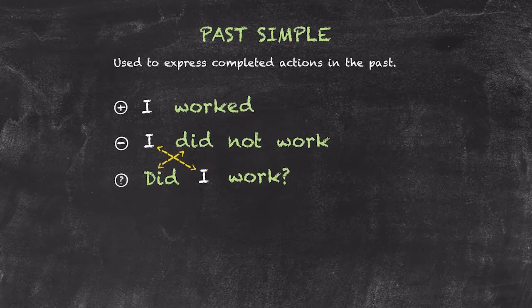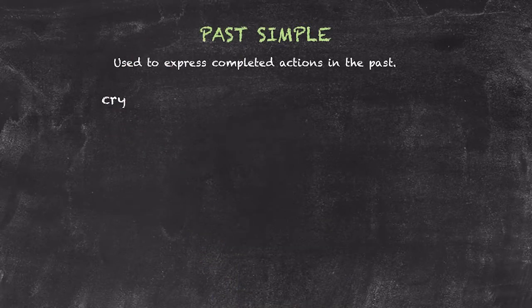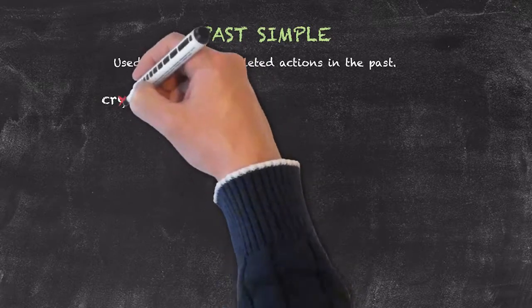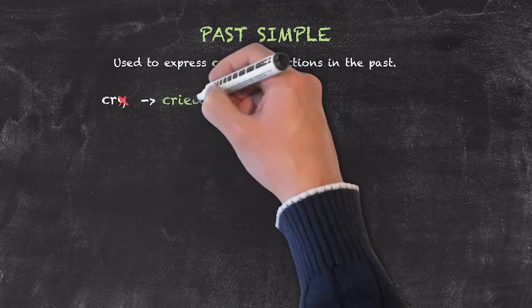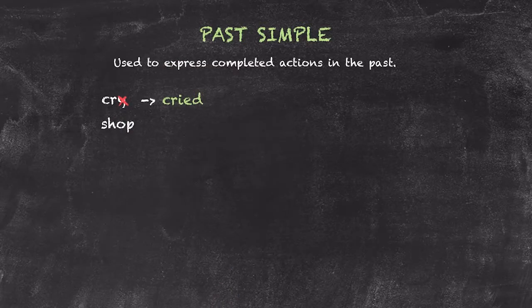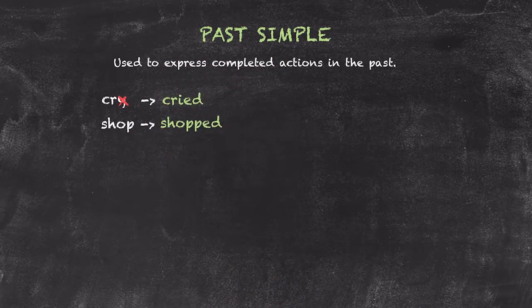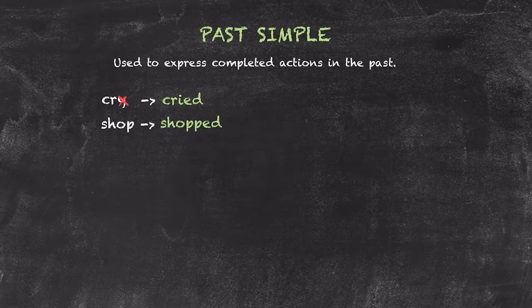In terms of spelling these conjugated verbs, of course there are some issues that we need to have a look at, especially when considering some patterns. So again, we have our y, changes to dropping the y and adding ied. And when we have a consonant, vowel, consonant, we double the consonant in question and finally add ed. These aren't irregular verbs, they're just irregular spellings for some verb conjugations.